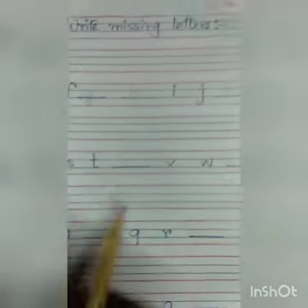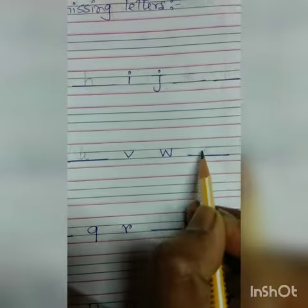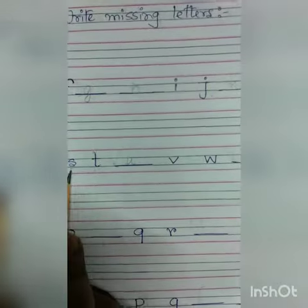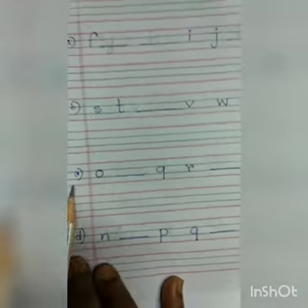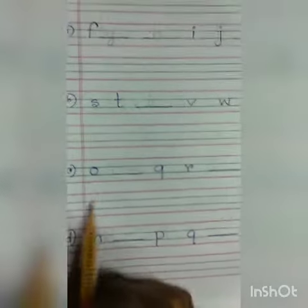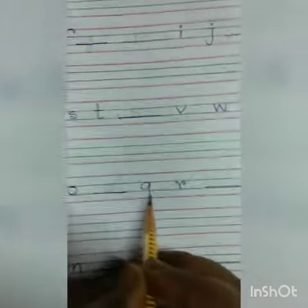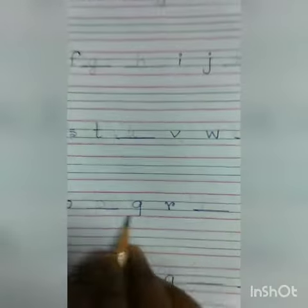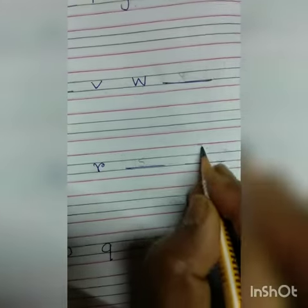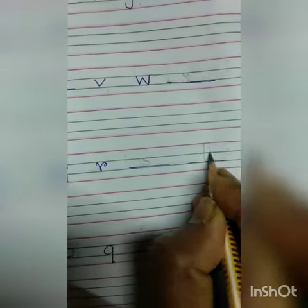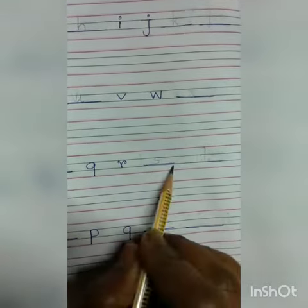Now number (b): this is small letter s, t. After s, t it's u, then v, w. After w it's x. So read: s, t, u, v, w, x. Next one is number (c): this is o — small letter o. You have to write small letter p. Then q, r is here — you don't have to write q, r. After q, r it's s, then after s is t. So you have to read: o, p, q, r, s, t.